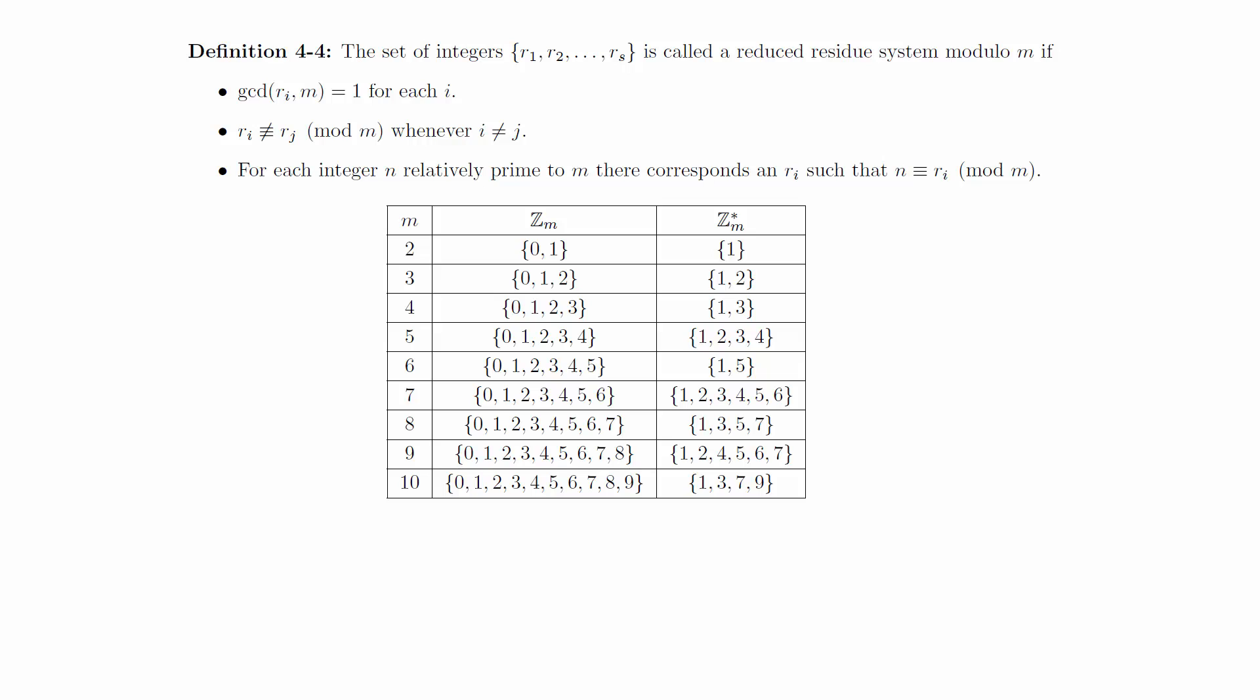This list shows what these sets look like when using the set z sub m as a complete system of residues. The reduced residue system derived from z sub m is usually denoted z sub m star.